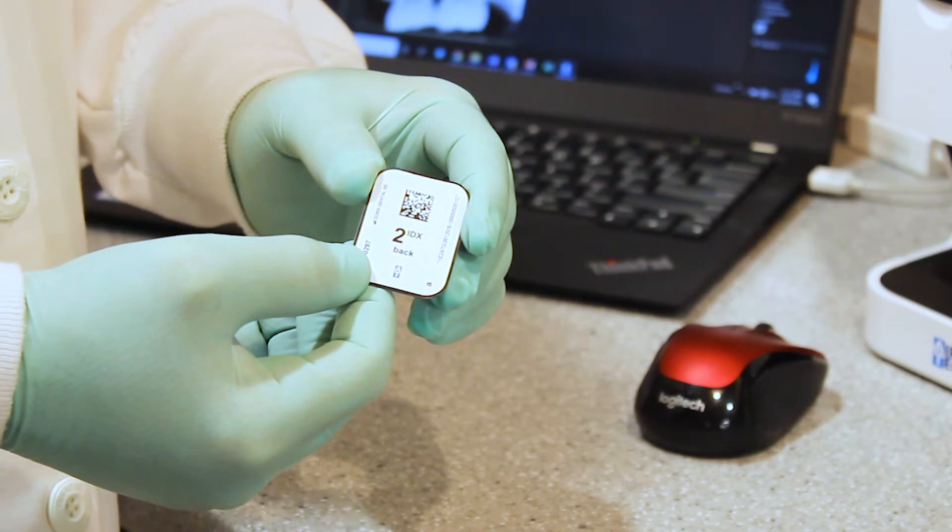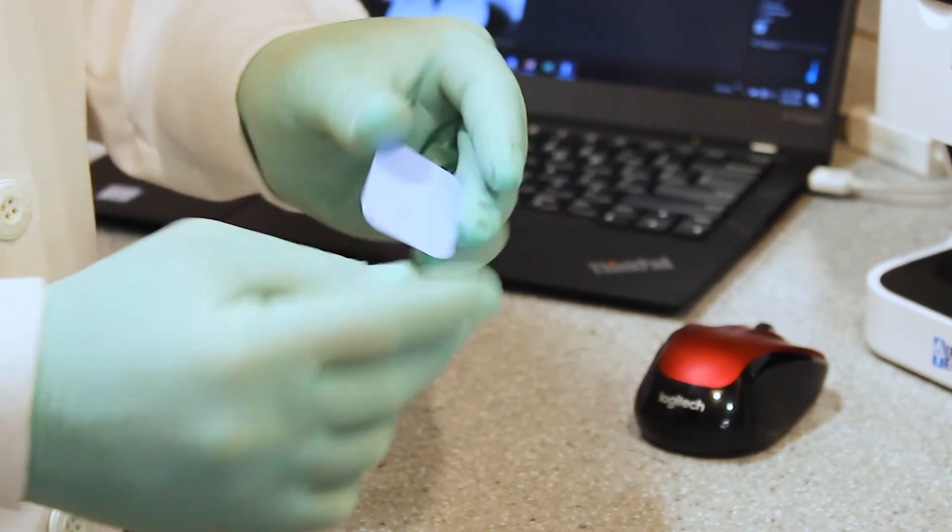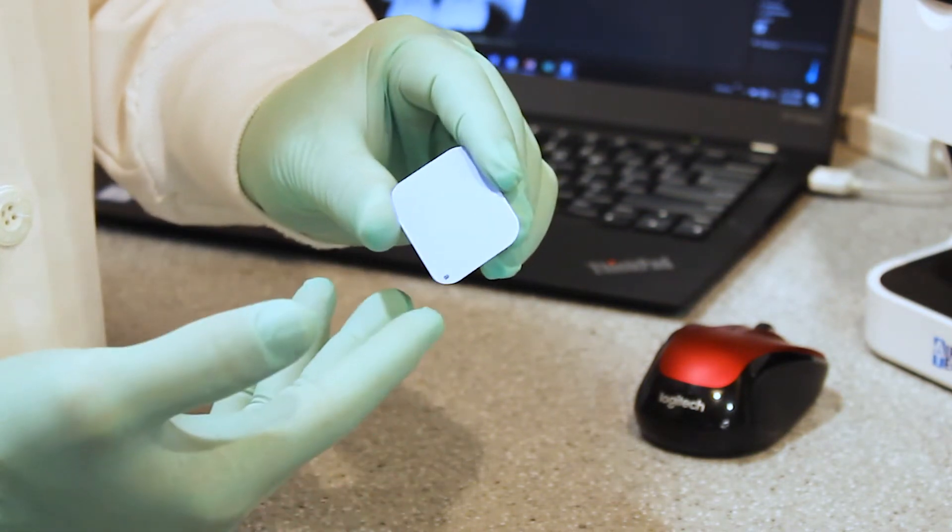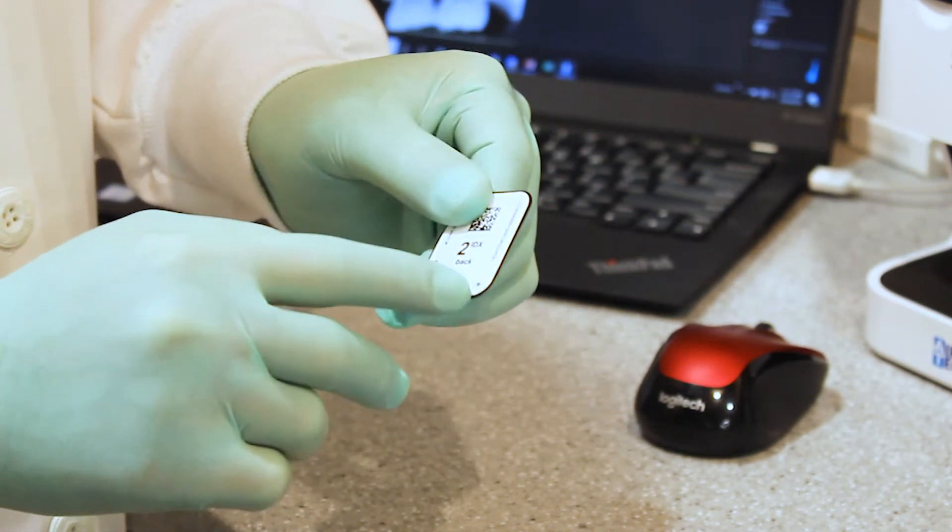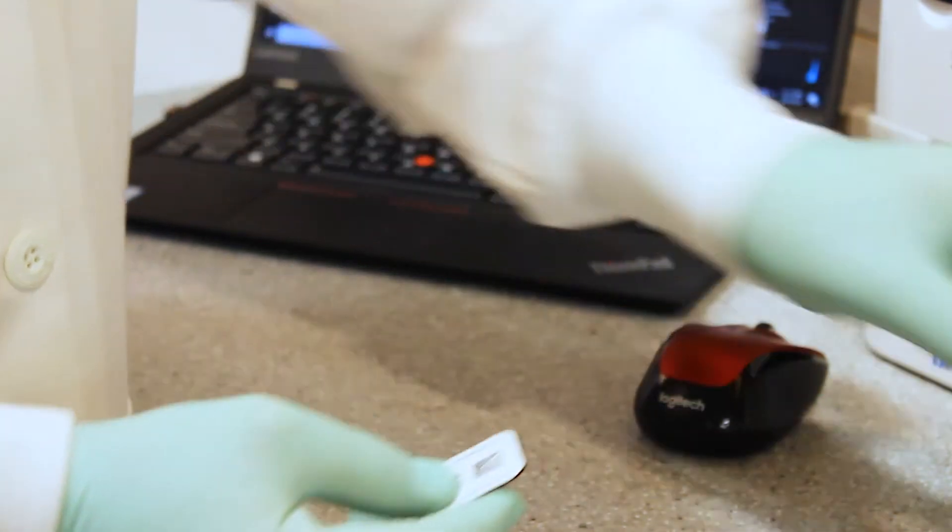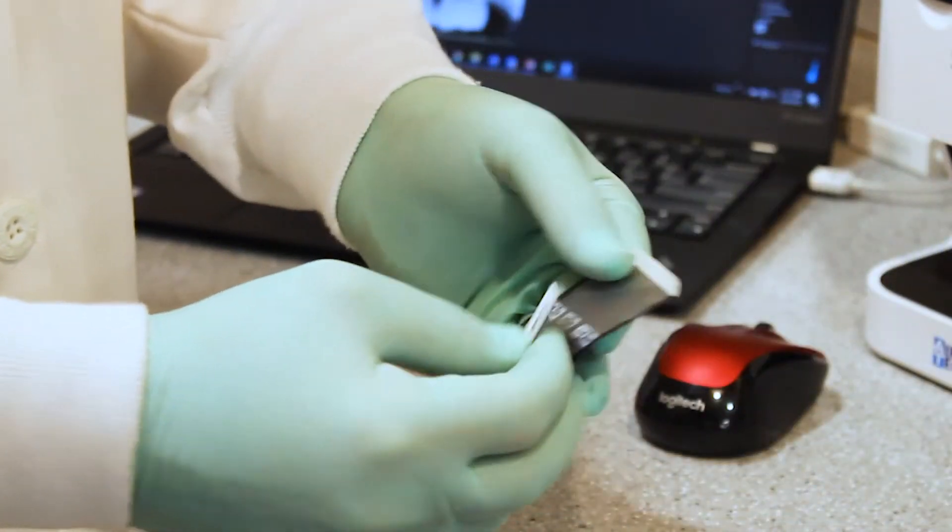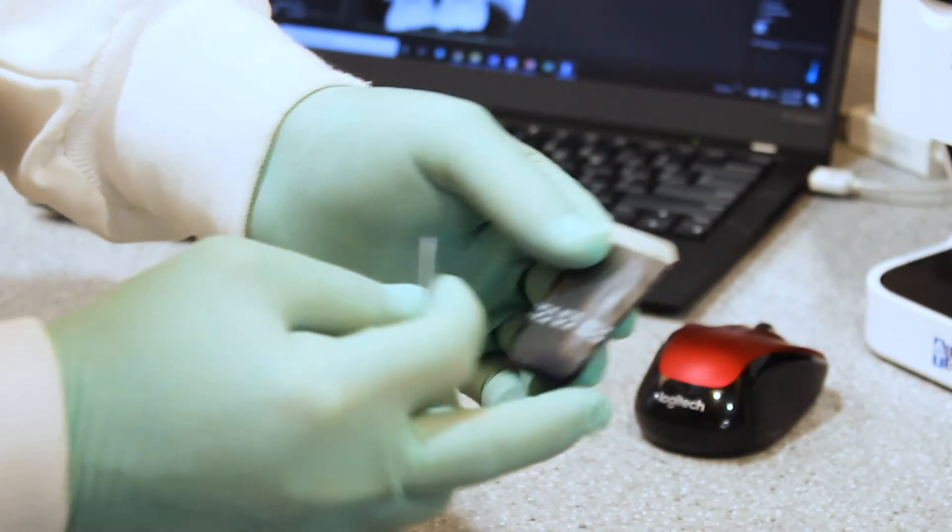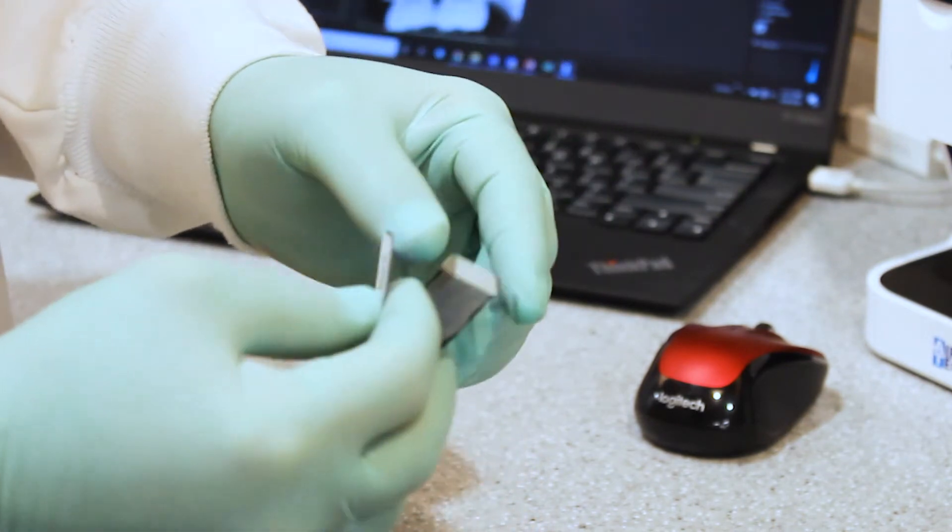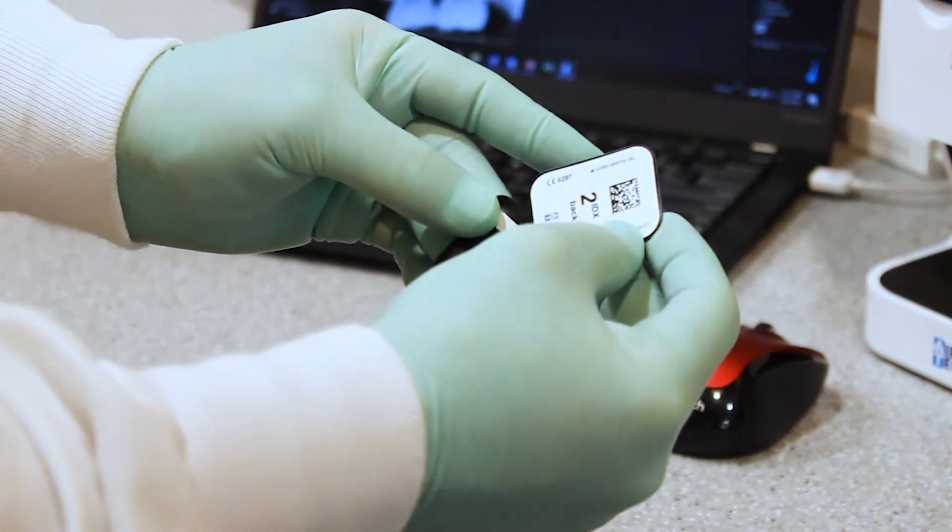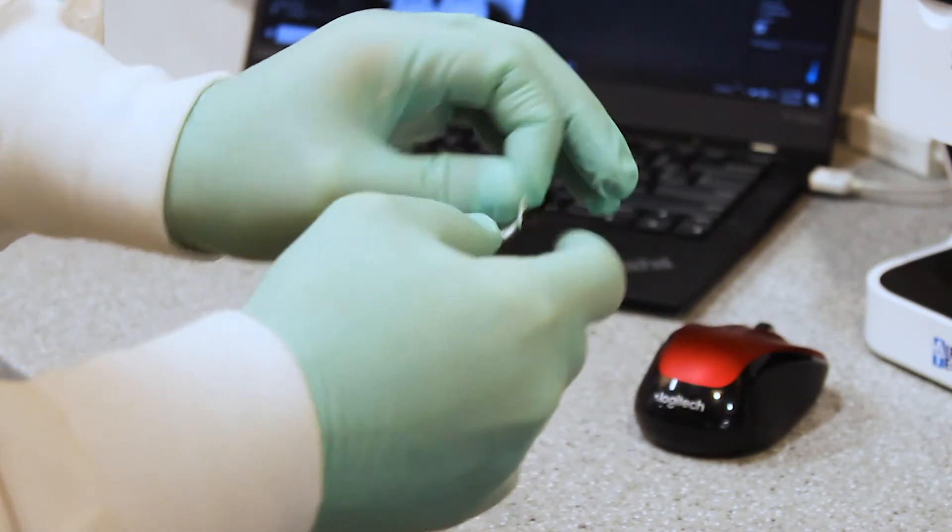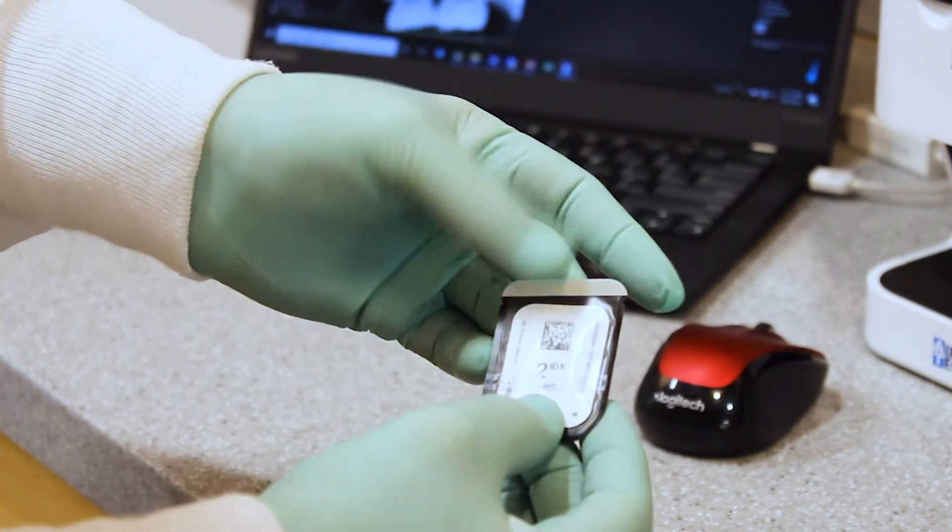This is the IDX phosphor storage plate. We have our non-sensitive side and our sensitive side, just like our existing phosphor storage plates. We have our A indicator on both sides. So these are going to go into our barrier envelope, where we have a clear side and an opaque side. These are the G-Series side-loading barrier envelopes that will get loaded like so. It goes in, as you see here.